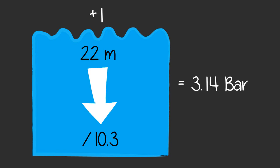Use your calculator. When you divide 22 by 10.3, you get this long number. Rounded to 2 decimal places, that is 2.14 bar. Now remember to add 1 for the surface, so that's 3.14 bar in total.